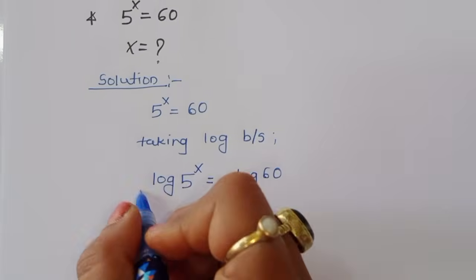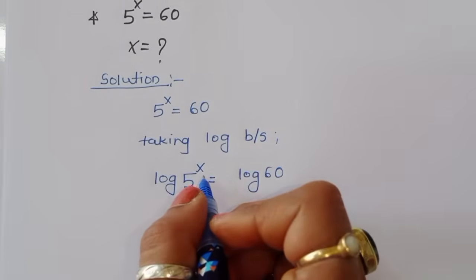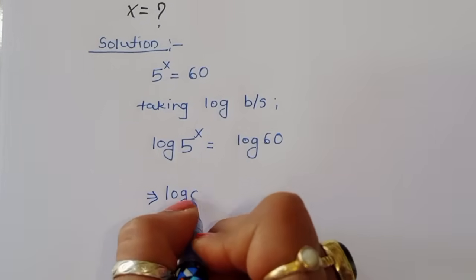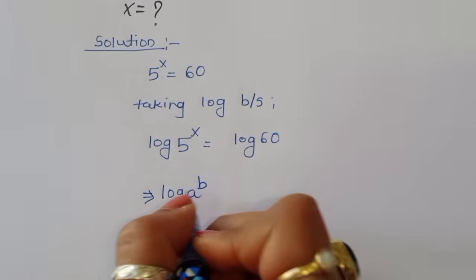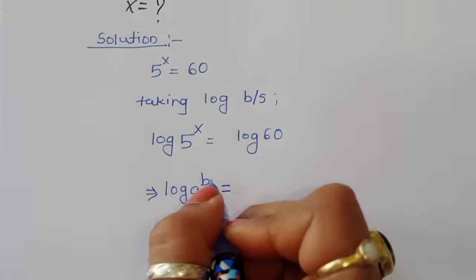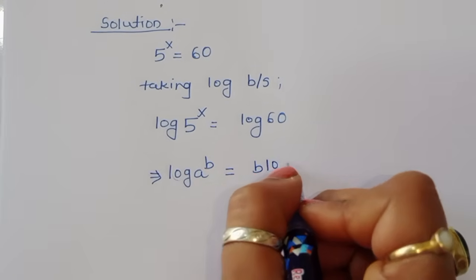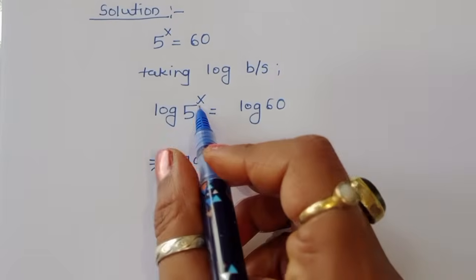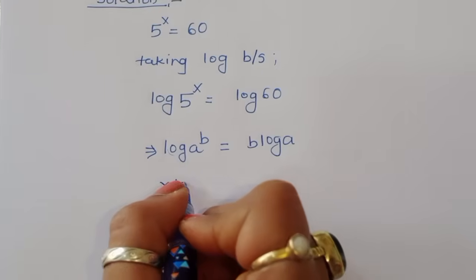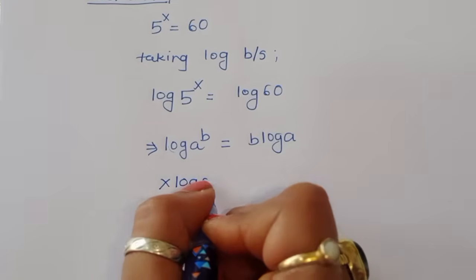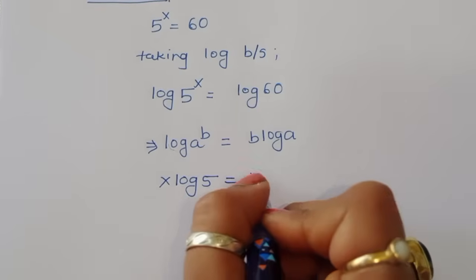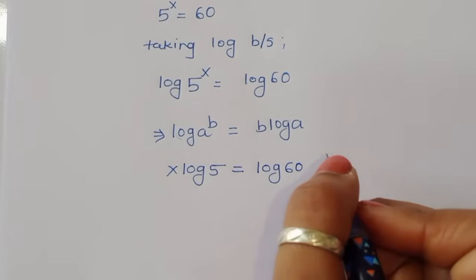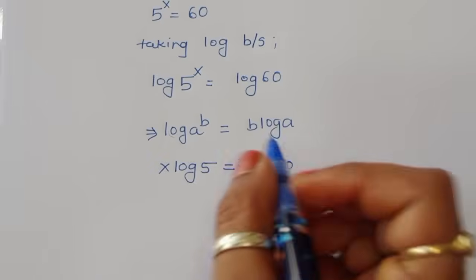We use the formula: log of a power b equals b times log of a. Applying this formula, we can write x log of 5 is equal to log of 60.